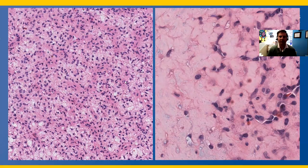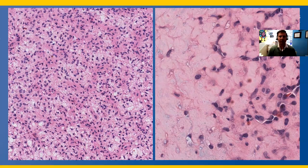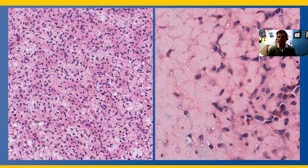At higher power, these cells are quite bland — spindle to ovoid, somewhat polyhedral in shape. This pattern here is a micro-lobular pattern, with smaller lobules compared to the macro-lobular pattern seen before. No cytologic atypia is identified. On the right, we confirm bland, polyhedral to spindle, somewhat stellate-shaped cells in a background chondromyxoid stroma.